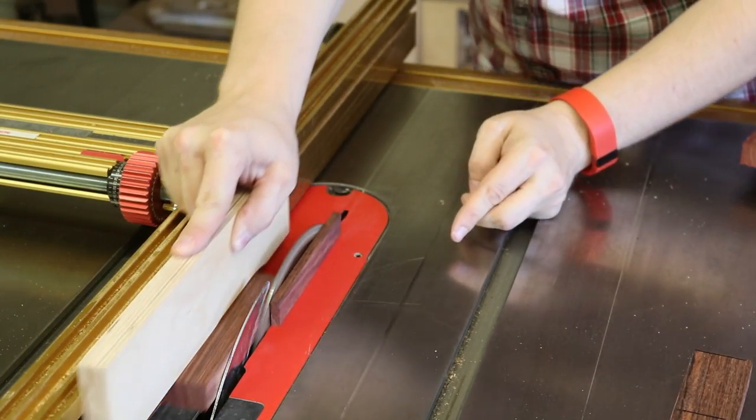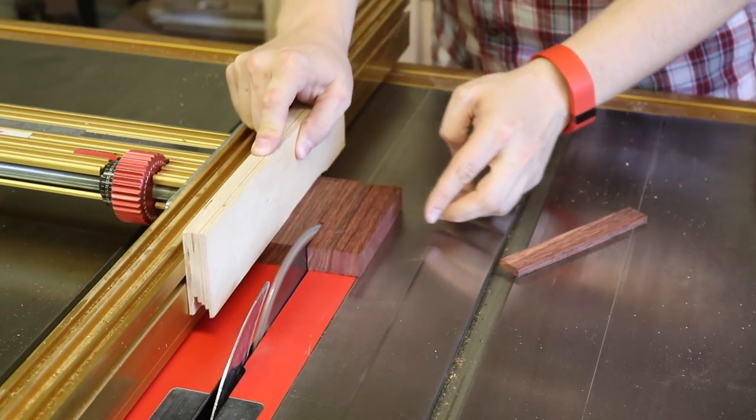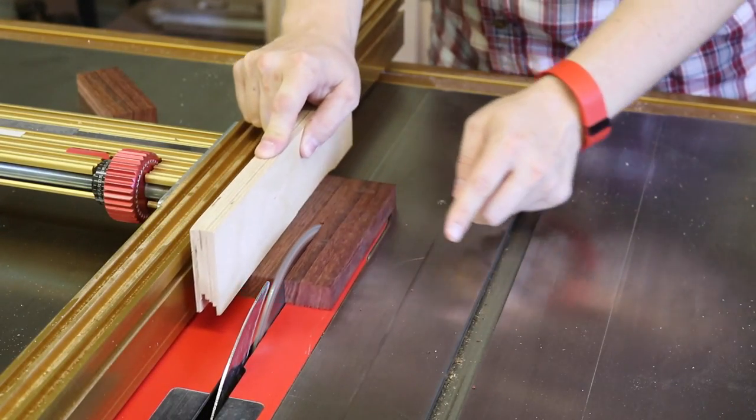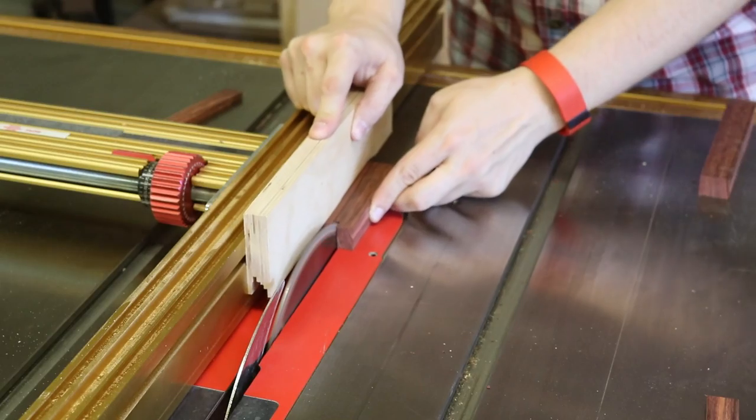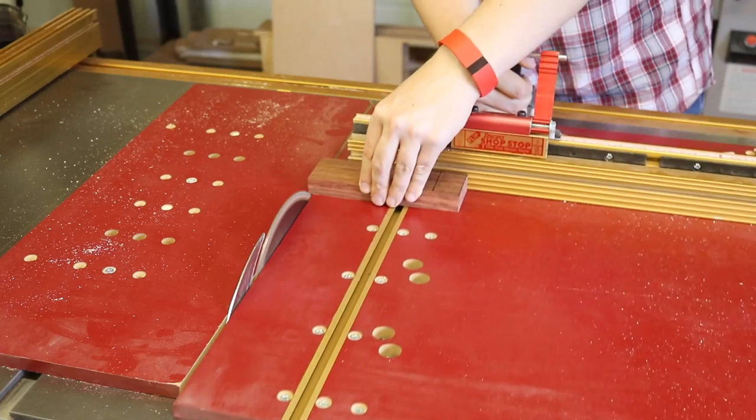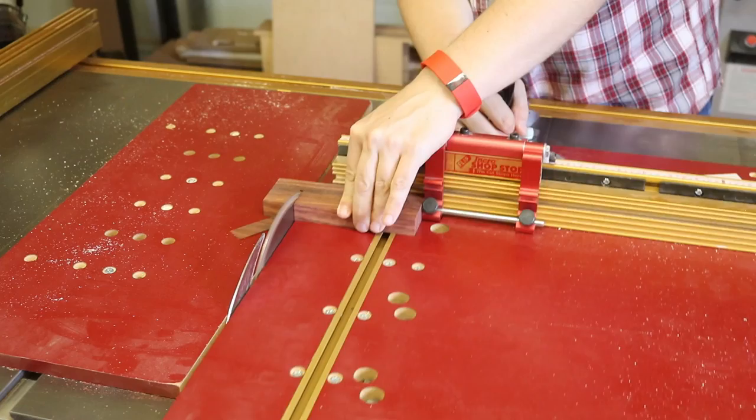And then I ripped those blocks to the widths I would need. So, two pieces for the inch and a half wide butterfly keys, and then the larger two butterfly keys after that. And then lastly, one last one at one inch wide. And then I cut all those to length.